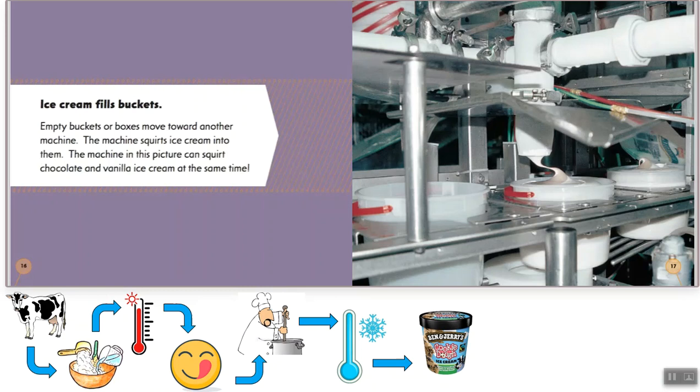Then ice cream fills buckets. Empty buckets or boxes move towards another machine. The machine squirts ice cream into them. The machine in this picture can squirt chocolate and vanilla ice cream at the same time. So if you like swirly ice cream this is the machine for you.